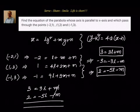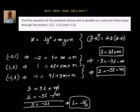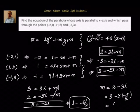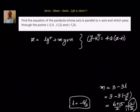Adding the two reduced equations, m cancels and we get 5 equal to minus 2l, so l equal to minus 5 divided by 2. Substituting l back into the first reduced equation 3 equal to 3l plus m, we get m equal to 3 minus 3 times minus 5 by 2, which equals 6 plus 15 by 2, giving m equal to 21 by 2.